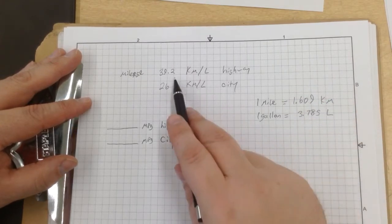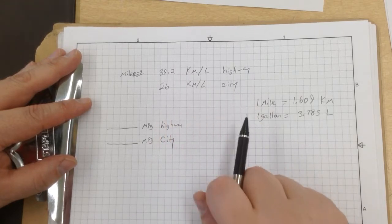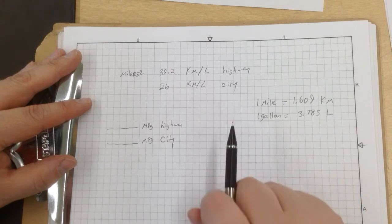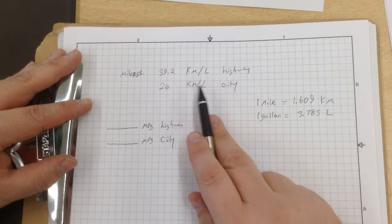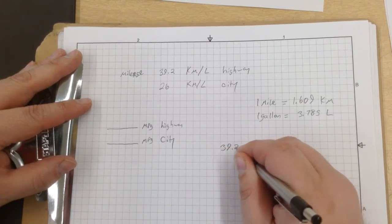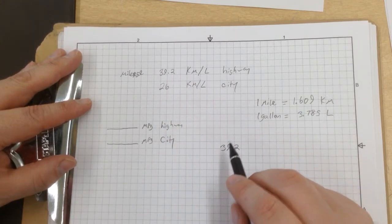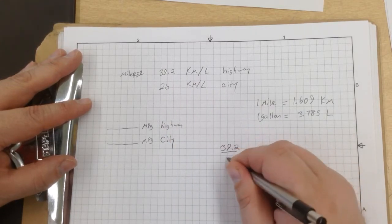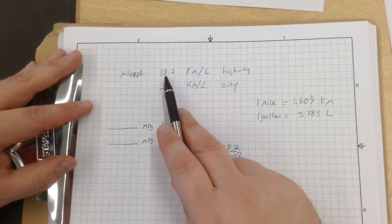Let's first start out with 39.2 kilometers per liter. We know everything that we need to know already. The first thing we're going to do is convert kilometers to miles. We're going to take 39.2, which is our 39.2 kilometers, and we are going to divide that by 1.609.